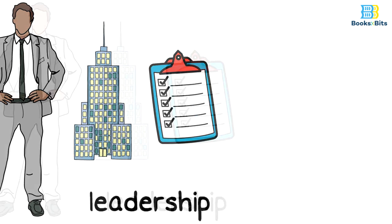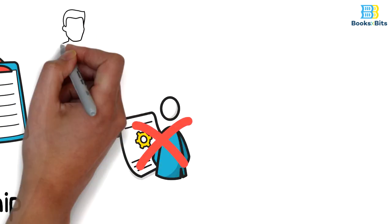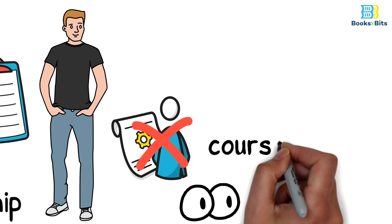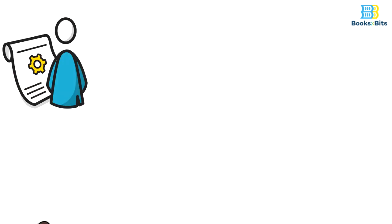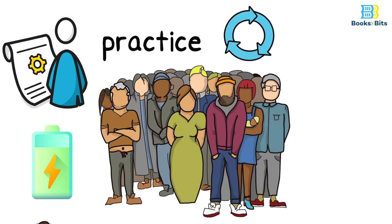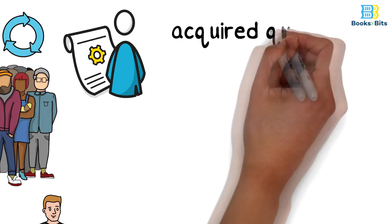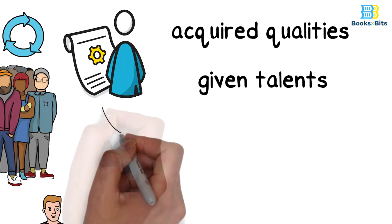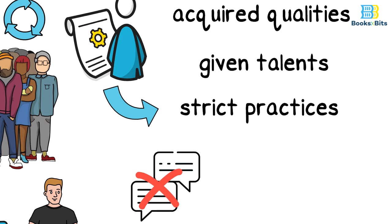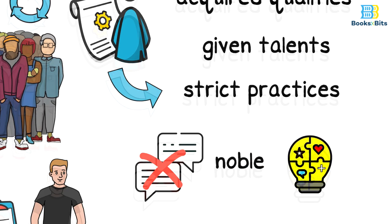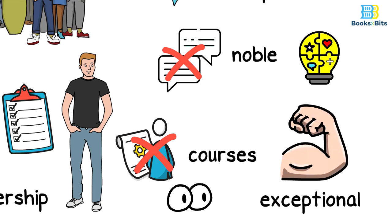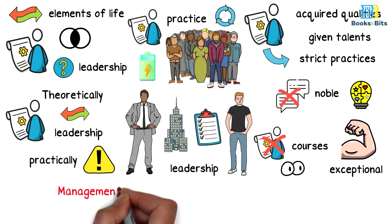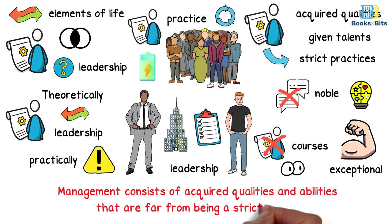What we must understand in this context is that management cannot be acquired by a person from examples around him, nor from courses that state how important management is. But management is something else, as it is more like the energy and ability that a person acquires from his continuous practice with his surroundings and the various situations he passes through. This makes management closer to acquired qualities and given talents than to knowledge in its precise and strict concept. And whenever management is turned to applying strict practices, it loses all its noble meanings. It is an art and skill that only those with exceptional talents and abilities can master. Management consists of acquired qualities and abilities that are far from being a strict science.